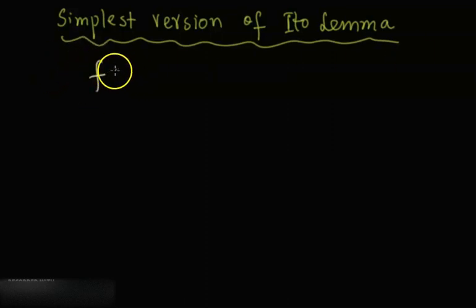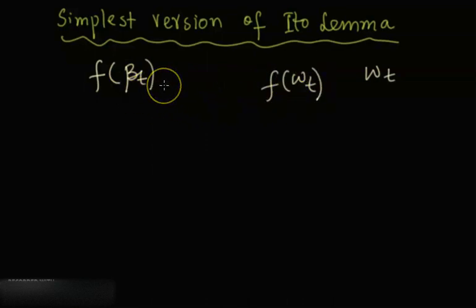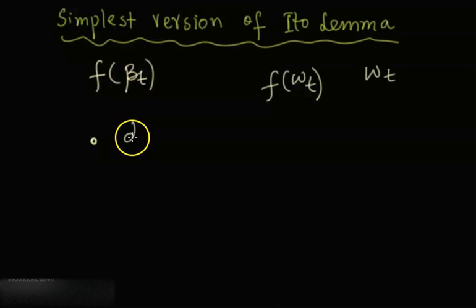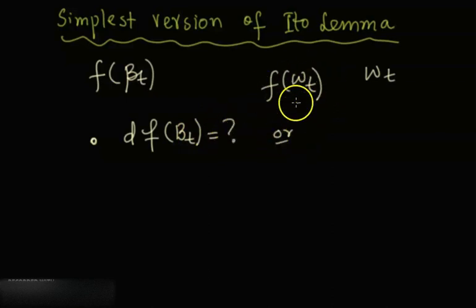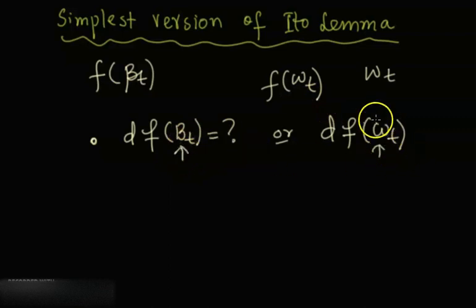Suppose you have a function which only depends on Brownian motion. In some books, Brownian motion is represented with w, so we can write this function as f(w(t)). We are interested in computing its dynamic or its differential — what is d(f(w(t))). Note that w(t) and B(t) are essentially the same in our discussions.